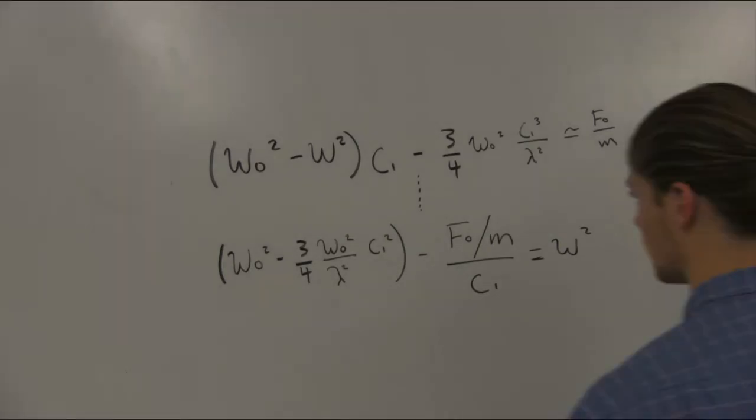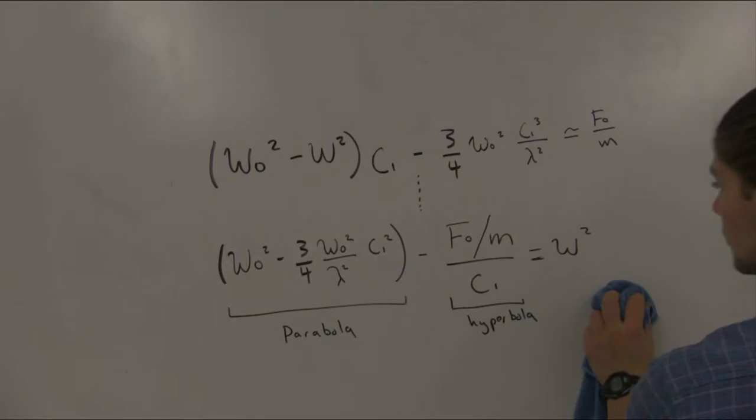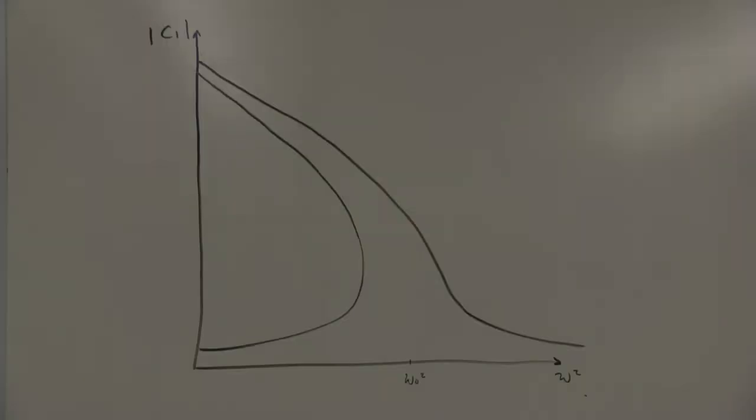We can think of the left-hand side of this expression as two functions of C1. One is a parabola, and one is a hyperbola. Using graphical techniques, we are given the displayed resonance curve from the previous expression.